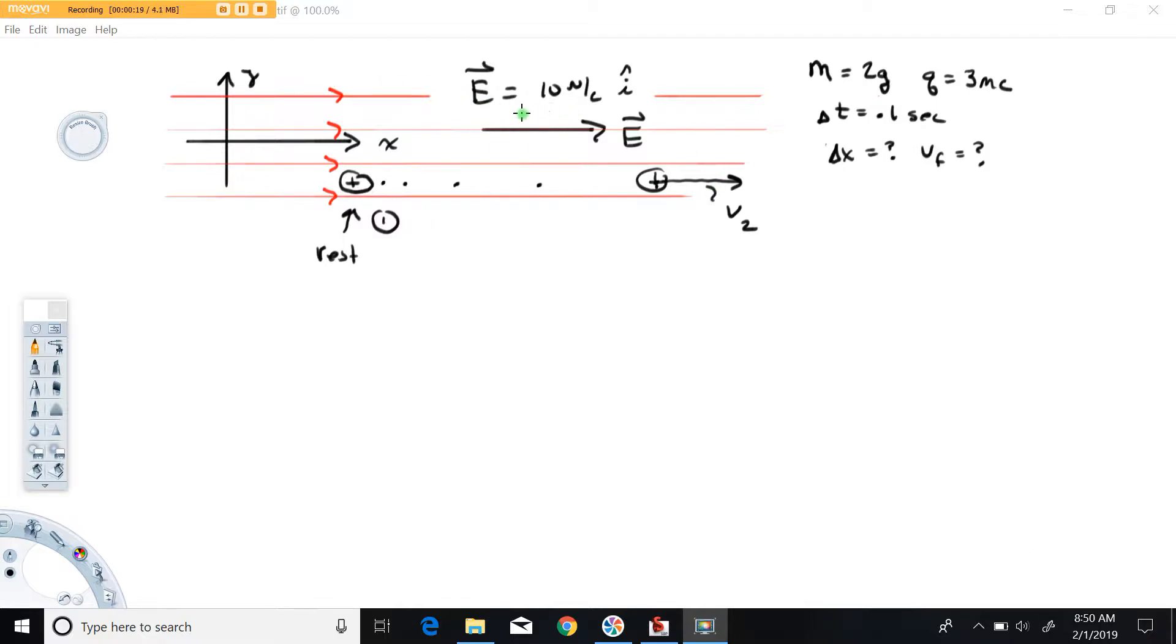a constant electric field of 10 newtons per coulomb pointing in the plus i direction relative to this coordinate system. These red lines are electric field lines—ways of visualizing the electric field. The spacing between the lines is pretty much constant throughout this region,